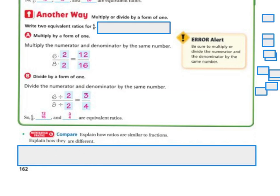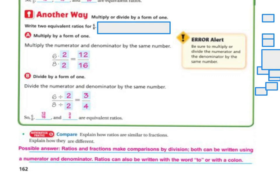Explain how they're similar and explain how they're different. Some possible answers that you could have said: ratios and fractions make comparisons by division. Both can be written using a numerator and a denominator. Ratios can also be written with the word 'to' or with a colon.